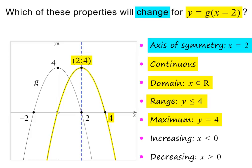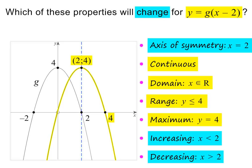What does change is the axis of symmetry, because the horizontal shift changes the x-coordinate of the turning point. And for the same reason, the interval in which the parabola is increasing also changes — it is now increasing in the interval x less than 2. This will also change the interval in which the parabola is decreasing — it is now decreasing in the interval x greater than 2. In other words, there are three properties that change when a parabola is shifted horizontally.